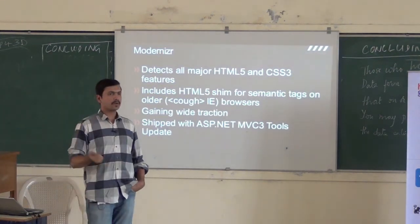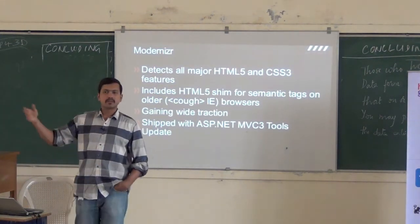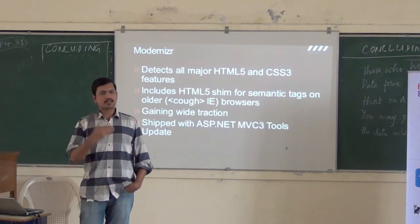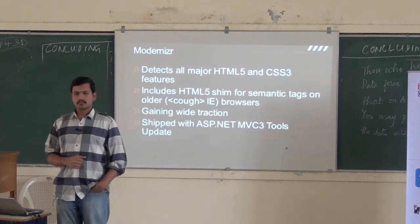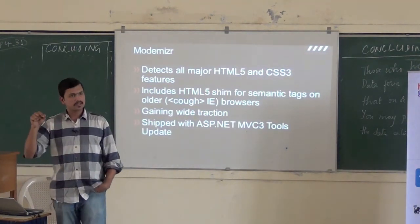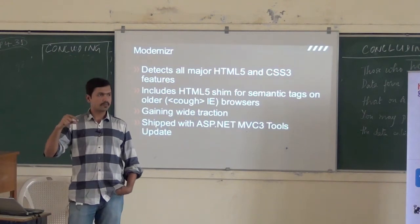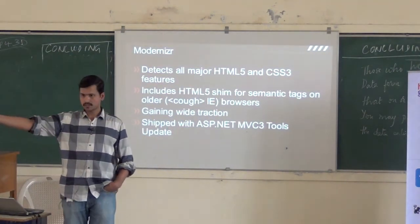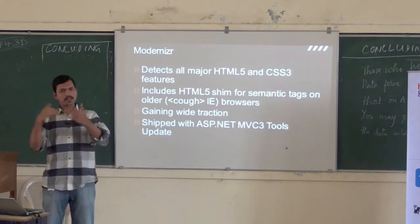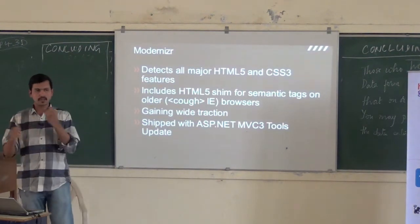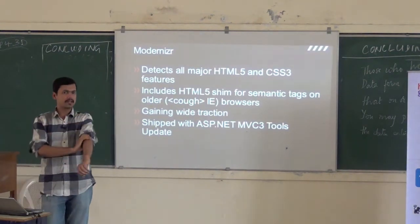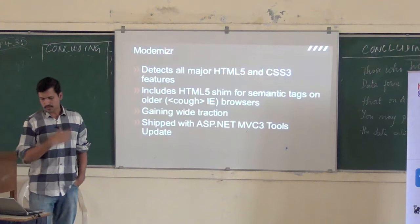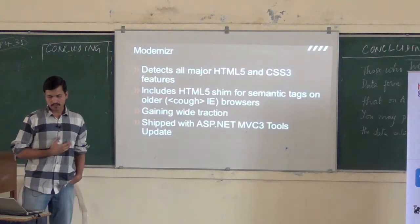You can check whether this particular client supports input types like email, URL, and so on. You can check whether a particular client supports input type email, and then you can write code to do that. Or you can put a fallback which will do script validation. So that is what Modernizr brings to the table.